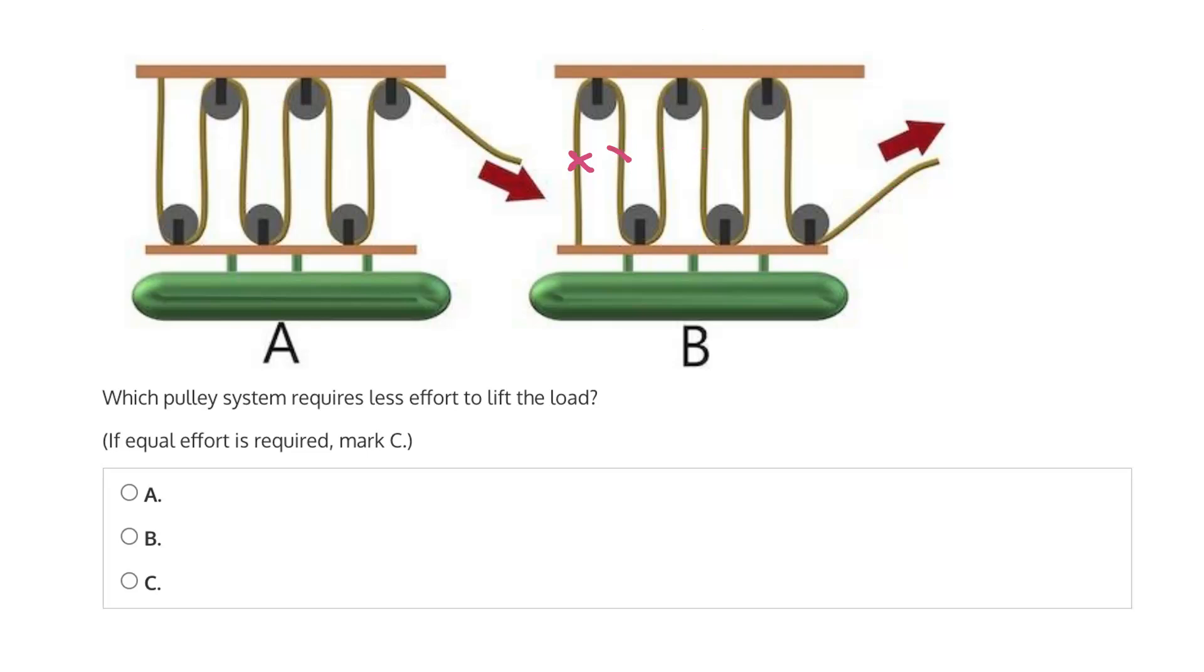So, if B uses 7 ropes, then the tension is 1/7th that of the original weight. Likewise, in A, where we only have 6 ropes, it is 1/6th. So, because 1/7th is a greater reduction than 1/6th, it is B that will require less effort to lift the load.